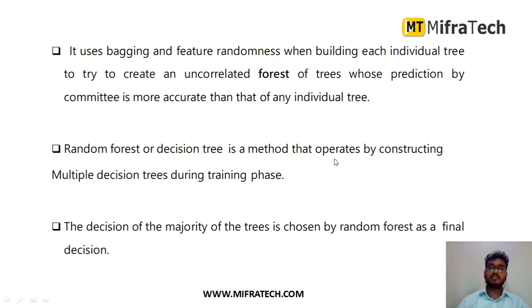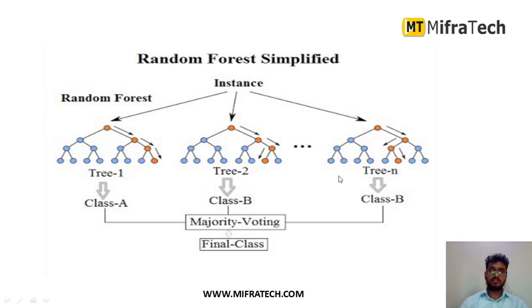Random Forest is a method that operates by constructing multiple decision trees in the training phase. The decision of the majority of trees is chosen by the Random Forest as a final decision — we finalize the output based on majority voting. As you can see, there are n number of trees from tree 1 to tree n. Each tree gives a prediction output, and by combining these via majority voting we get our final predicted output.